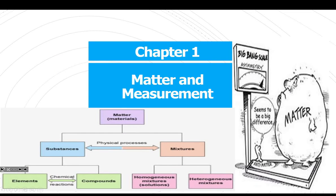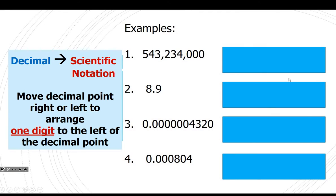First thing we need to review is Chapter 1 — it's all about matter and measurement. Remember that matter can be broken into two categories: mixtures and pure substances. Pure substances go to elements and compounds, and mixtures go to heterogeneous and homogeneous. You need to be able to do scientific notation backwards and forwards.